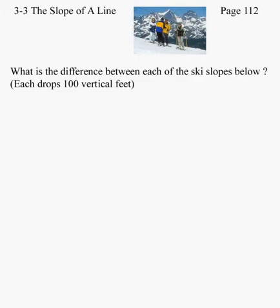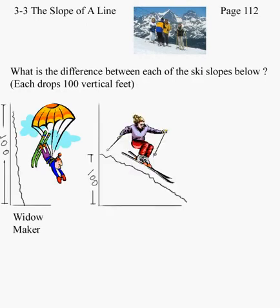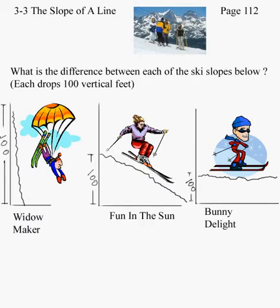So what we want to do is start out by taking a look at maybe a few pictures and see if we can find the difference between some of these things below. So as we look at what's the difference between each of the ski slopes, and each one here is a little hint as we compare and contrast them, have a hundred vertical feet drop. So we've got a slope I jokingly call Widowmaker, another one called Fun in the Sun, and Bunny Delight.